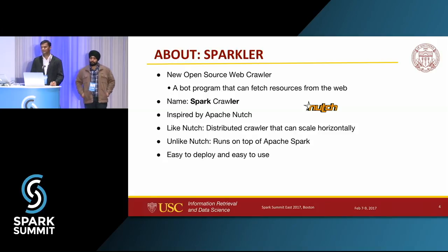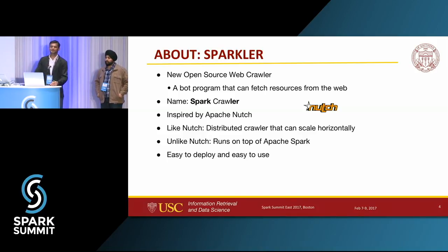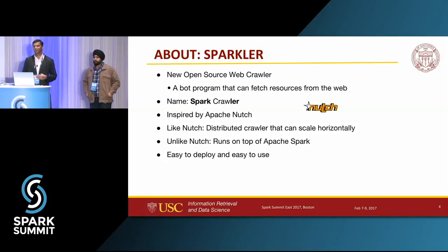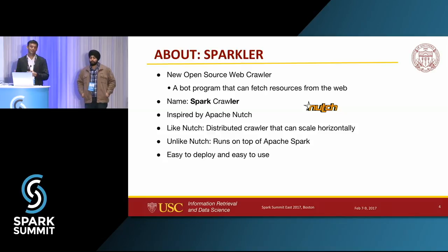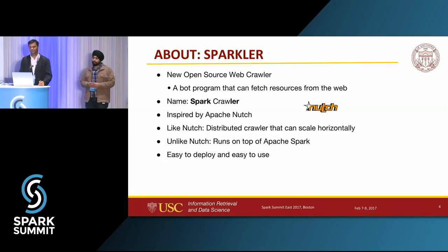Sparkler, as the name suggests, is a contraction of Spark Crawler — it's a crawler that runs on Spark. It is inspired from Apache Nutch, which is a famous distributed crawler. If you trace back the history of Hadoop and Spark, they all connect to Nutch because Hadoop emerged out of Nutch when they wanted to scale it in a distributed fashion. Sparkler is just like Nutch, but it runs on top of Apache Spark, and we made it easy to use and deploy.